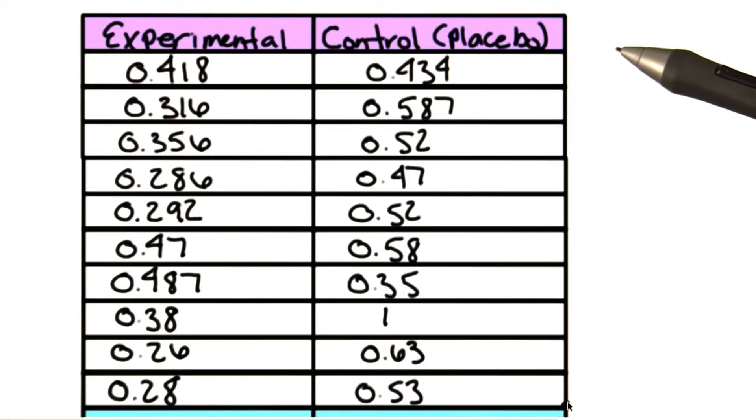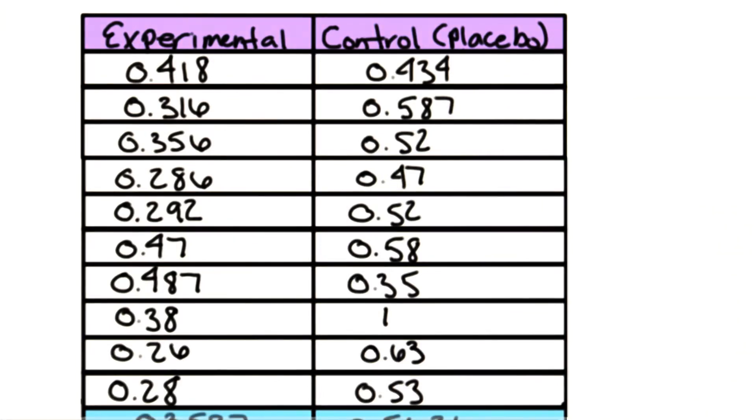Here we have our data from our caffeine and reaction time experiment. The caffeine group is called the experimental group, and the no caffeine group is called the placebo or control group.